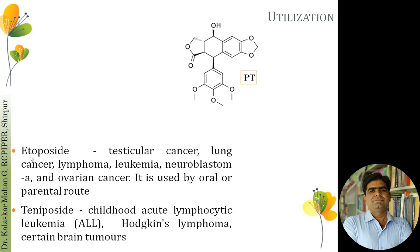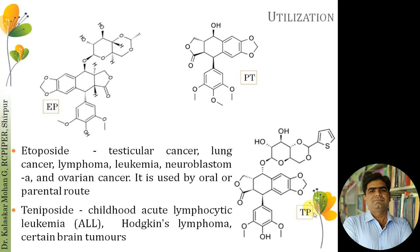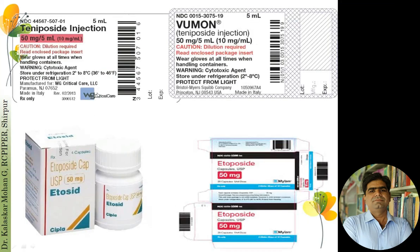This led to the development of two semi-synthetic derivatives: etoposide and teniposide. Etoposide is useful in different cancers such as testicular cancer, lung cancer, lymphoma, leukemia, neuroblastoma, and ovarian cancer, and is given by both oral and parenteral routes. Teniposide is given only by IV (parenteral) route and is useful in childhood acute lymphocytic lymphoma, Atkinson's lymphoma, and certain brain disorders. Teniposide is available in injection form and etoposide in solid dosage form.